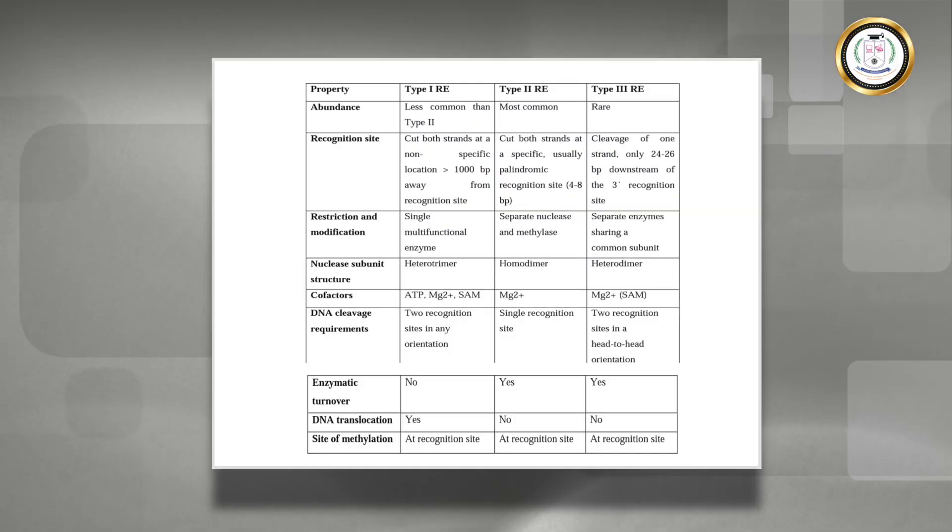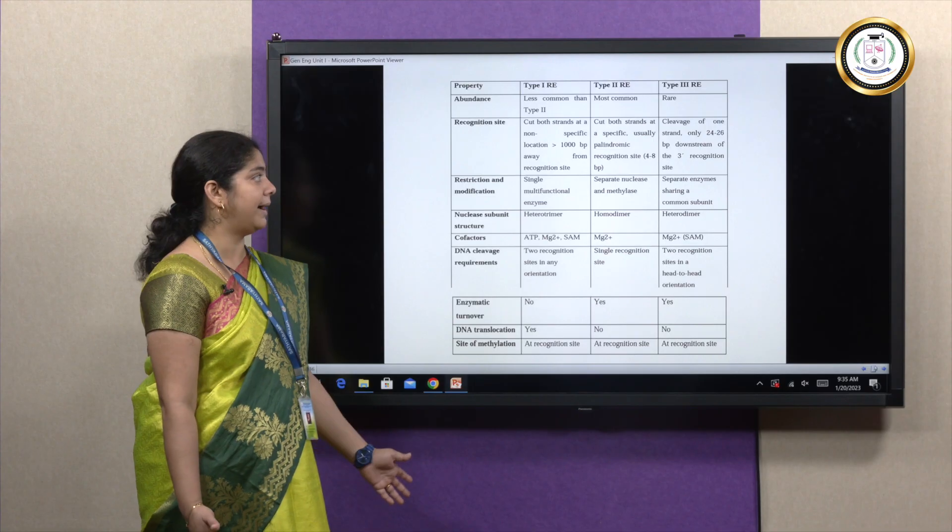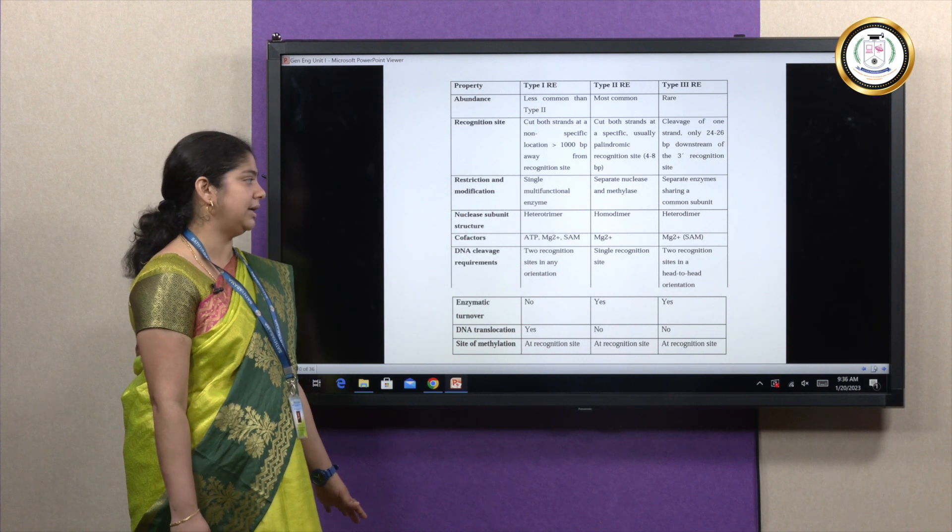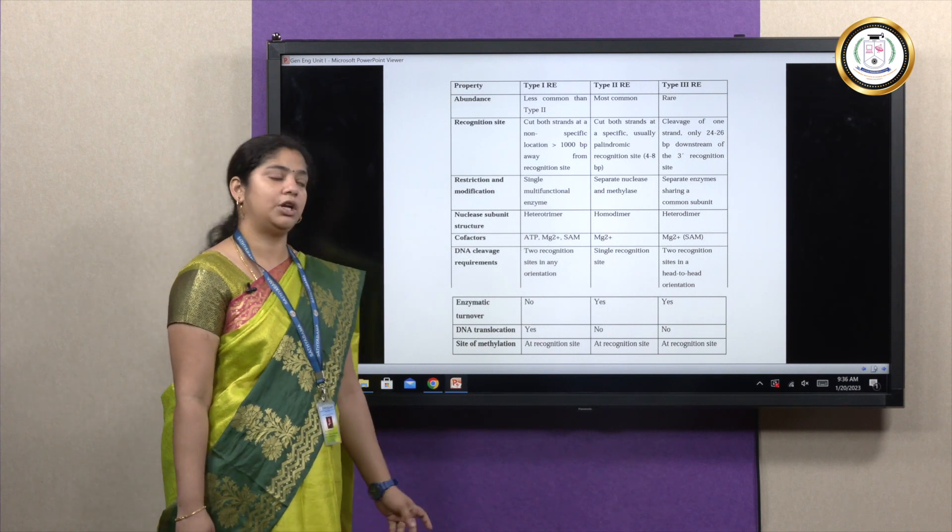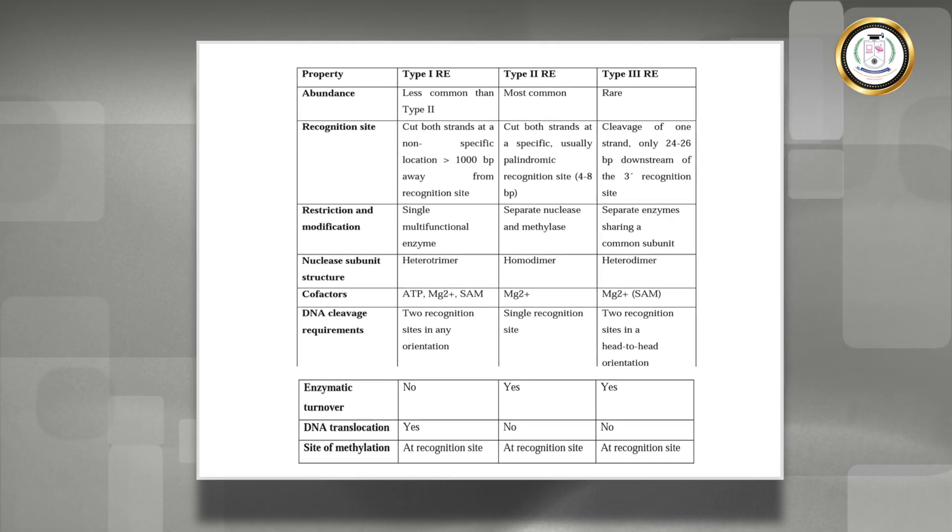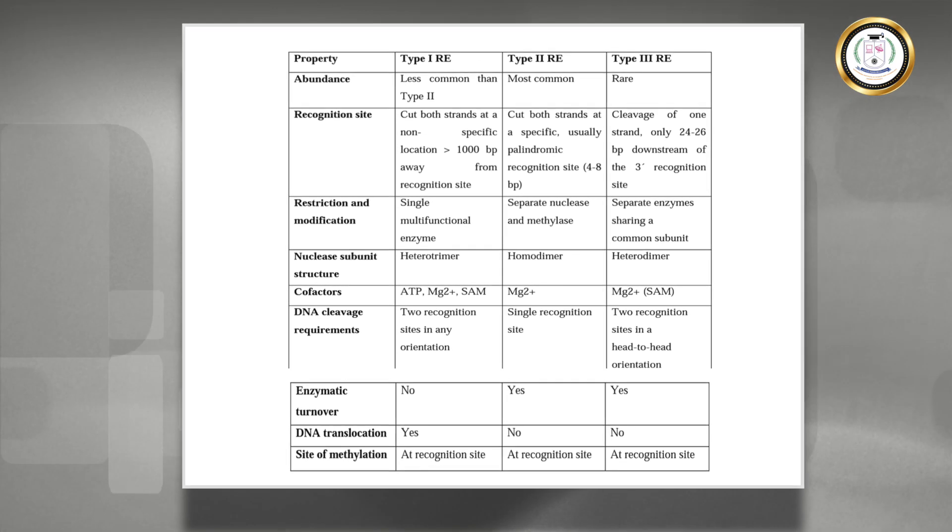Here we can see three types where type 2 is the most commonly used one and type 2 is more specific compared to 1 and 3. It has a separate nuclease and methylase activity and it's a homodimer which requires magnesium 2+ and the enzymatic turnover is also good and has a specific recognition site.